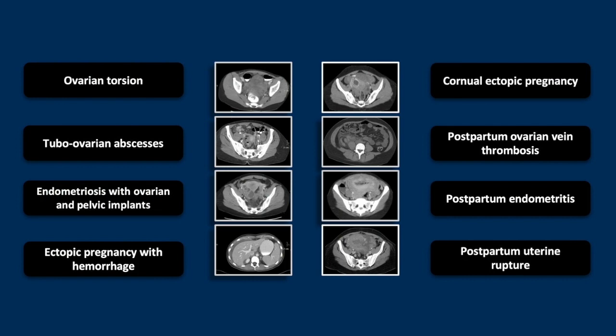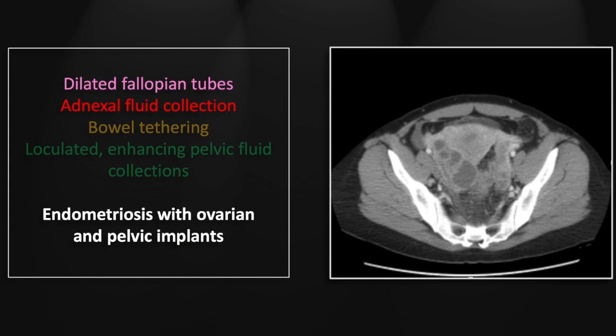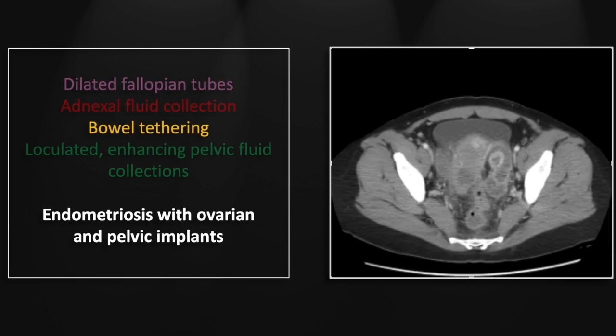Our next case is of endometriosis with ovarian and pelvic implants. You'll see again findings consistent with hydrosalpinx — dilated tortuous tubular structures in both adnexal regions. There's an adnexal fluid collection here on the right as well. Note the tethering of the bowel to these fluid collections, a finding quite characteristic of endometriosis.